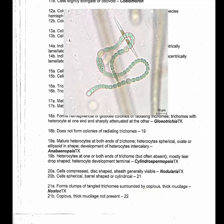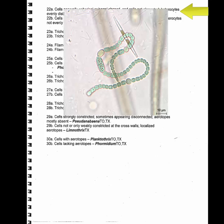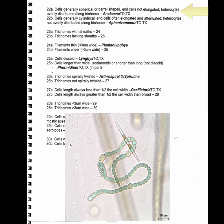At 22: cells generally spherical or barrel-shaped, end cells not elongated. We have to look at the end of the filament. In Aphanizomenon, the end cell is not roundish but has a kind of smoothed-off end to it. End cells not elongated, heterocysts evenly distributed — unfortunately in this one we only have one showing, but when you were looking at them they were more or less evenly distributed along the filament. So the answer is Anabaena.